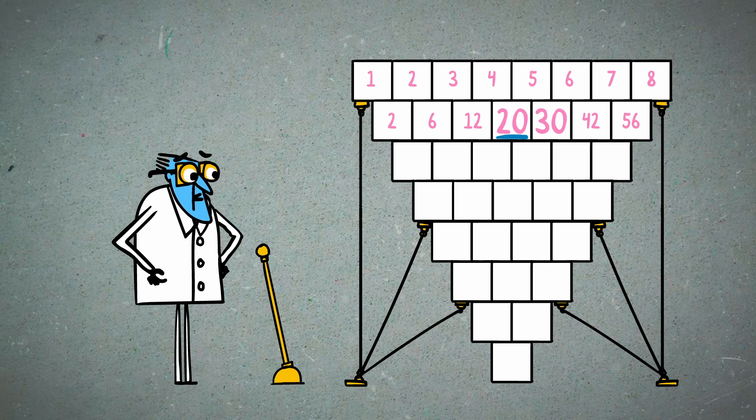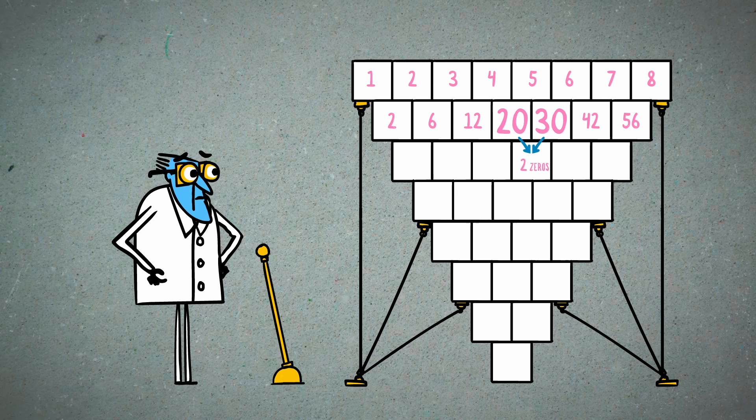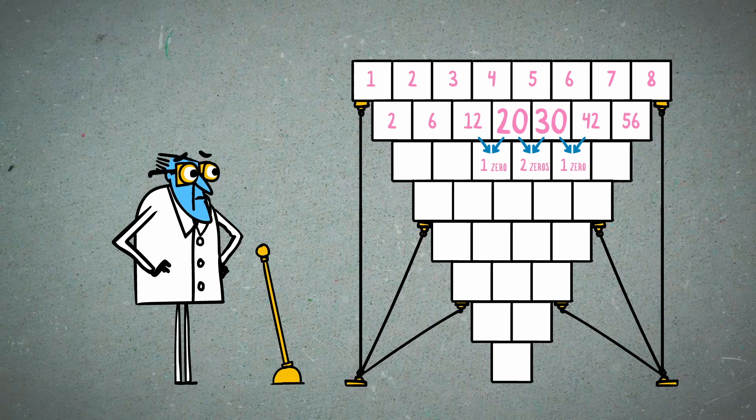20 and 30 each have one zero, so the product of both cells will have two trailing zeros, while the product of either cell and an adjacent non-zero ending cell will have only one. When we continue all the way down, we end up with 35 zeros in the bottom cell.